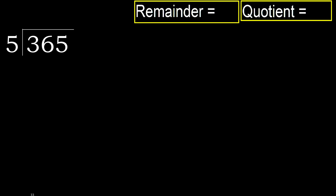365 divided by 5. 3 is less than 5, therefore we move to the next digit. 36 is not less, therefore we work with 36.